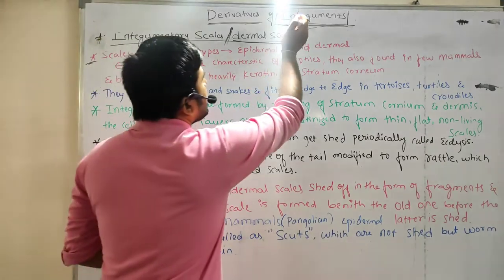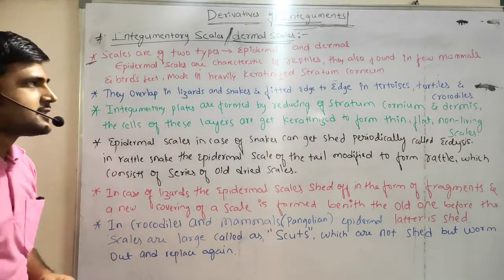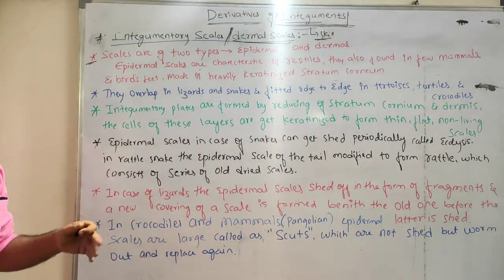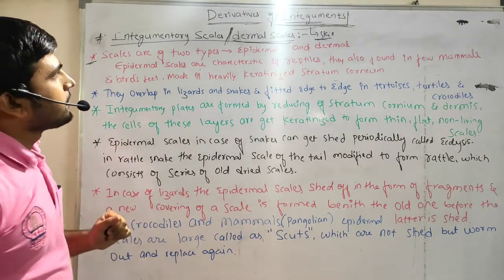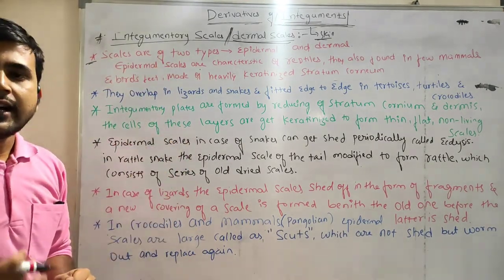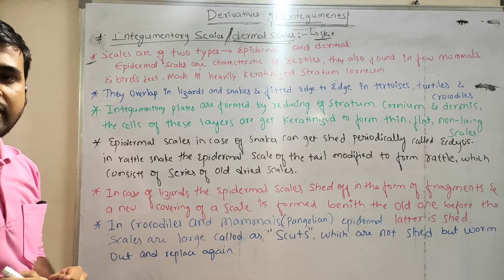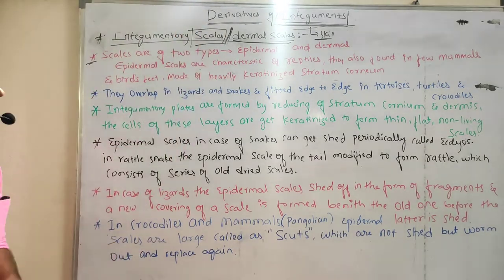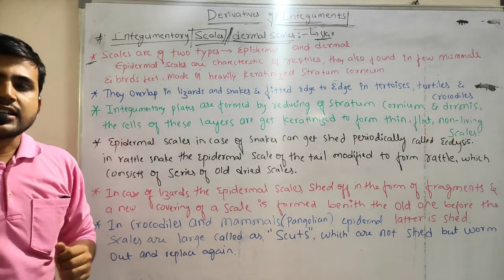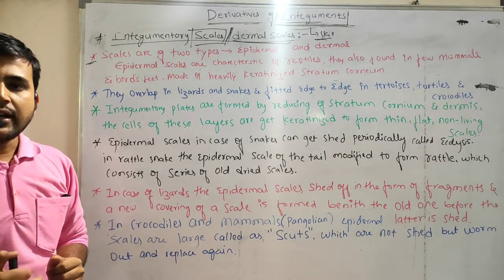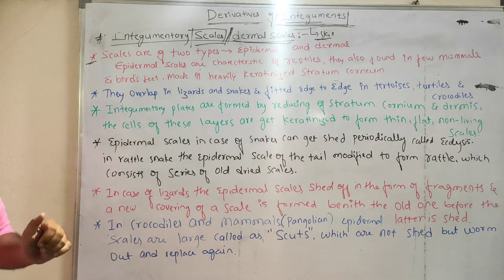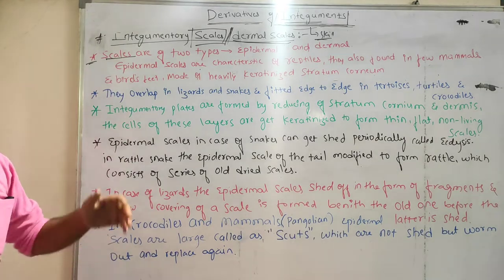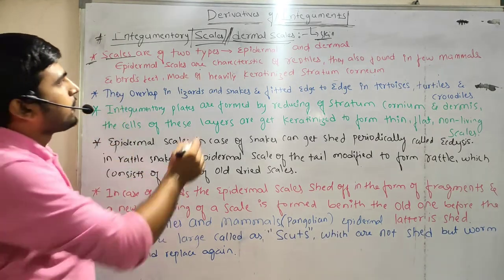We know that integument is nothing but the skin. We all discussed about the integumentary system in our last video. So in this video we are going to discuss about the derivatives of the integument. In derivatives of integument, we particularly choose scales as one of the derivatives. Skin is the largest organ of the body of any living being. Scales are of two types — whatever scales we get from the integument, they are of two types.